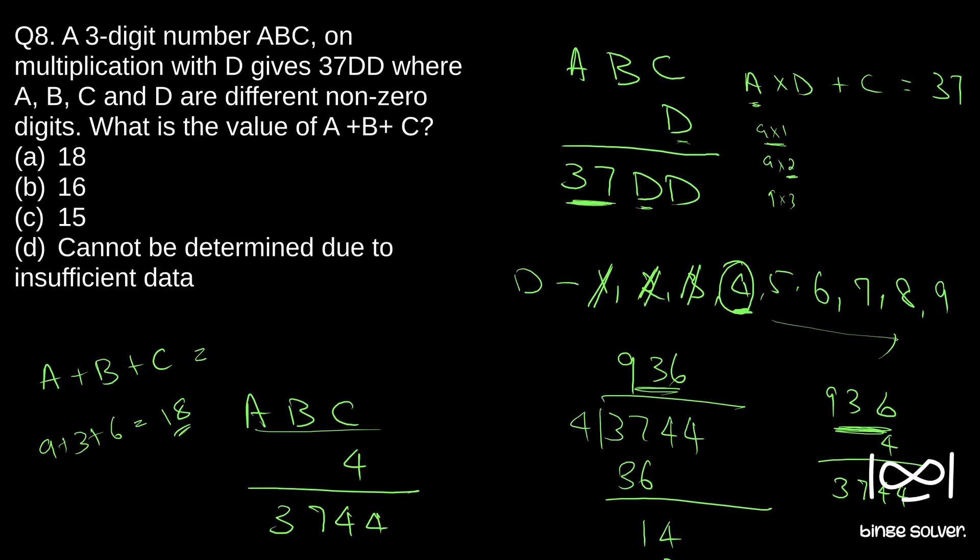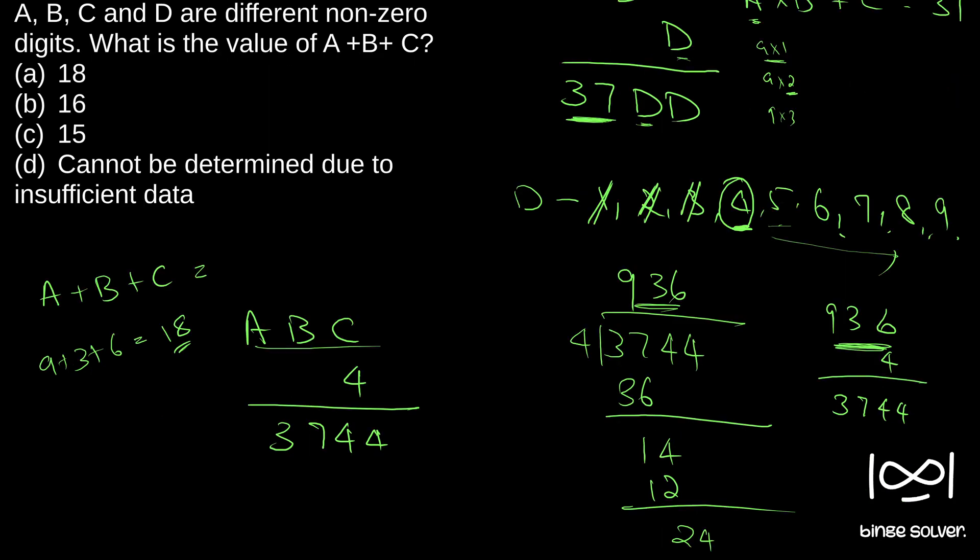The moment we get 18, we cannot mark 18 as our answer. We have to see whether any of these D options 5, 6, 7, 8, 9 gives a possible answer and gives another answer. If every possible combination either gives 18 or doesn't fit the given conditions, then we can say 18 is the correct answer. But if it gives any other value like 16 or 15 for any of these D values, then we will have to say the answer will be cannot be determined due to insufficient data. That is the problem here. We will have to check all the combinations and make sure that 18 is the only possible result.